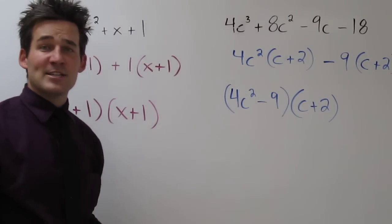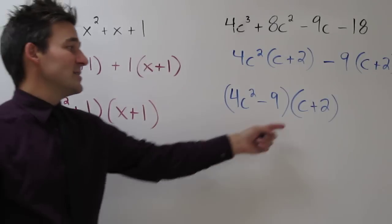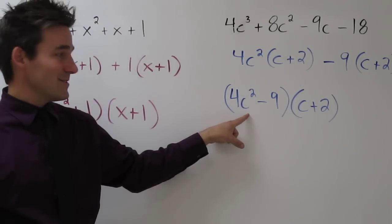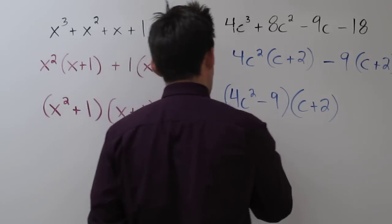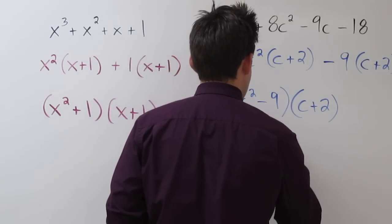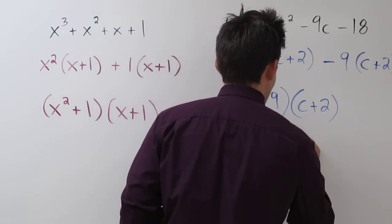c plus 2 is, but this is a difference of squares. We could factor this as 2c plus 3 times 2c minus 3.